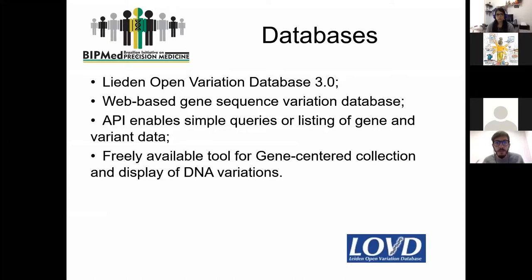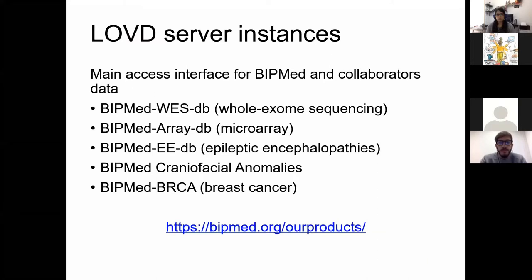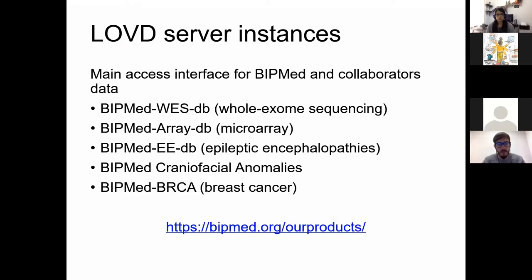The LOVEDeath database is LOVD — Leiden Open Variation Database version three. It's web-based, focused on sequence variation, with an API allowing simple queries returning genes, variations, and patients. Our instances look into five different databases: whole-exome data, microarray data, and phenotype-specific databases for epilepsy, craniofacial abnormalities, and breast cancer.